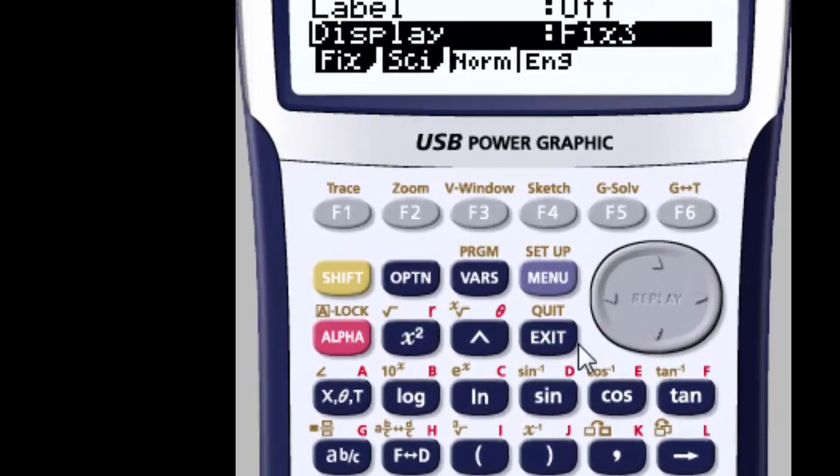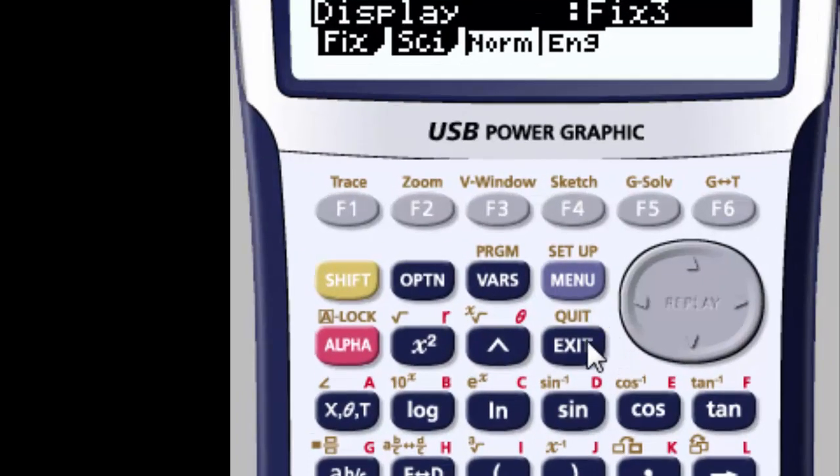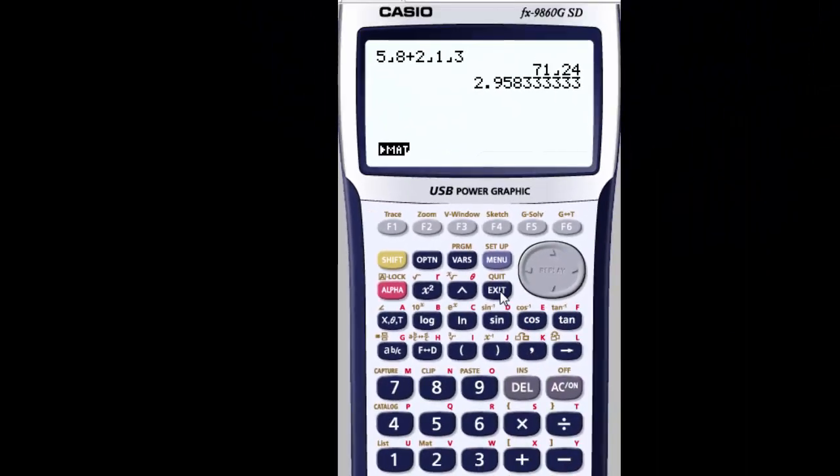So if I go back, and by the way, hitting exit here is like hitting the back arrow on a computer where it takes you back one. And I'm going to hit F to D again. You'll see it has three decimals, three decimal places. So that's how you put fractions into a Casio graphing calculator.